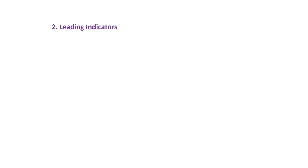Second, I'm going to talk about leading indicators. Leading indicators attempt to predict future price movements before they occur. They are believed to provide early signals of potential trend reversals or continuations. Common examples of leading indicators are as follows. Number one, Relative Strength Index RSI: RSI measures the magnitude of recent price changes to evaluate overbought or oversold conditions. Traders can use this to enter or exit a profitable trade.